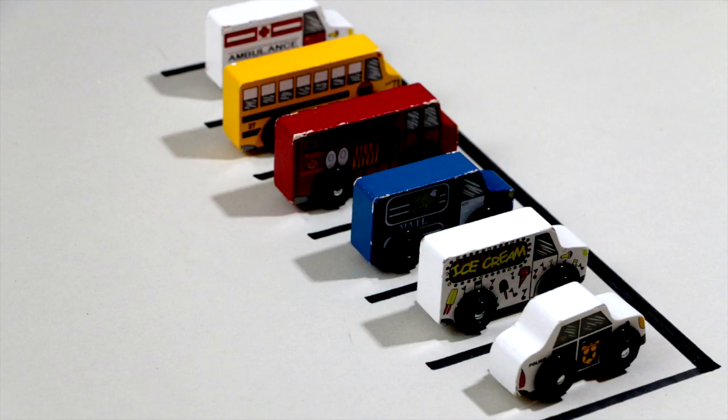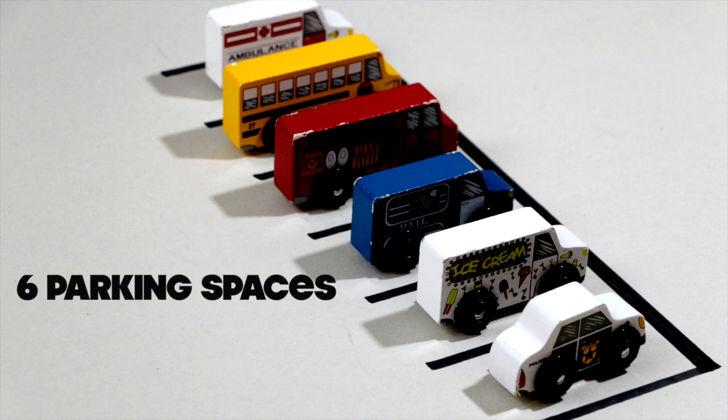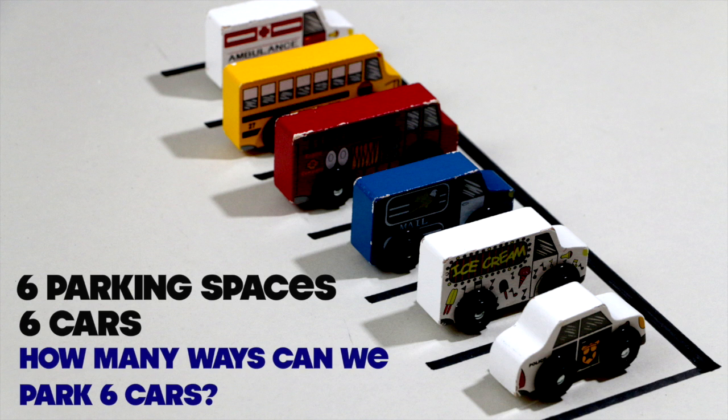So now let's take a look at a situation where this gets a little bit more complicated. So what happens in a parking lot? So let's take a look at an example where we have six parking spaces. So in these six spaces, we could park up to six cars. So my first question is, if we have six cars, how many ways can we park the six cars in our six parking spaces?